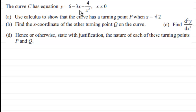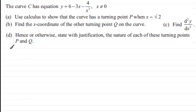The curve C has equation y equals 6 minus 3x minus 4 over x cubed, where x doesn't equal zero. We've got to use calculus to show that the curve has a turning point P when x equals root 2. Using calculus means to use differentiation, and that is what we're going to be doing here.